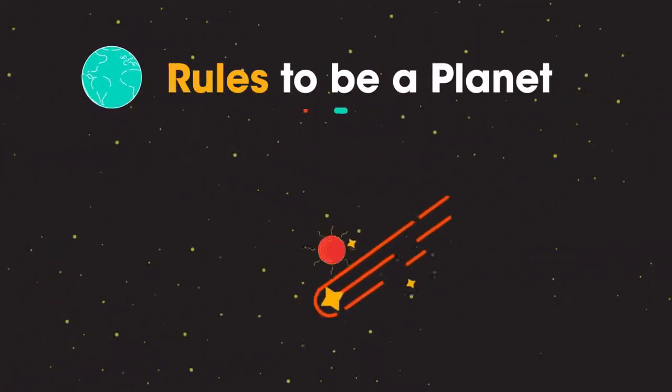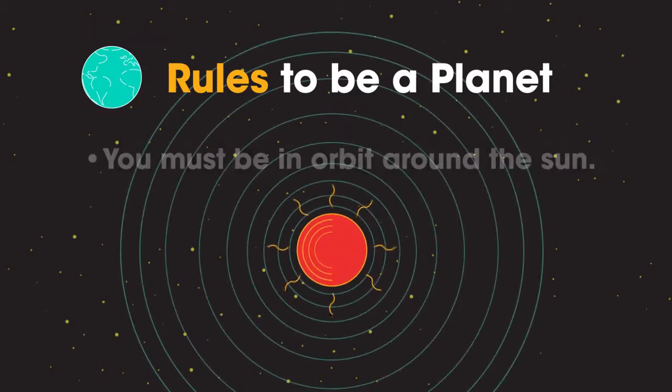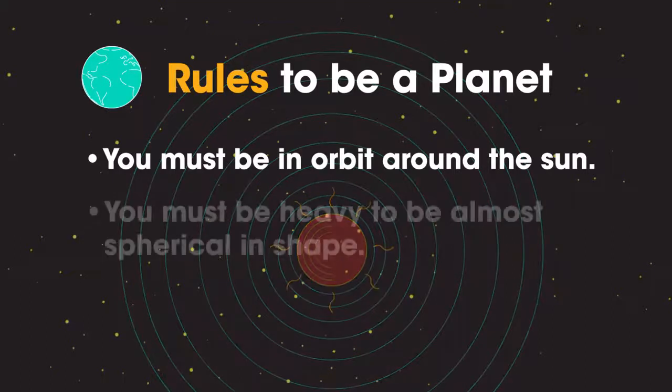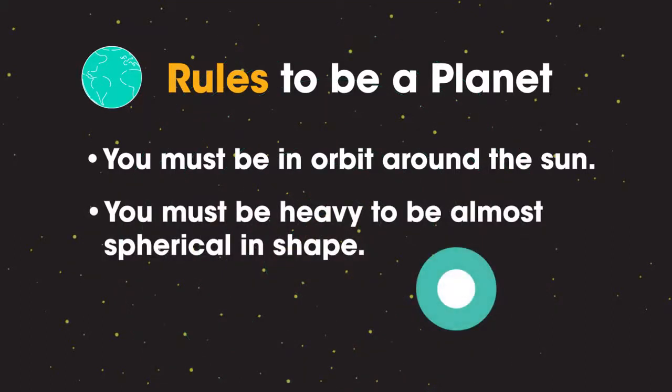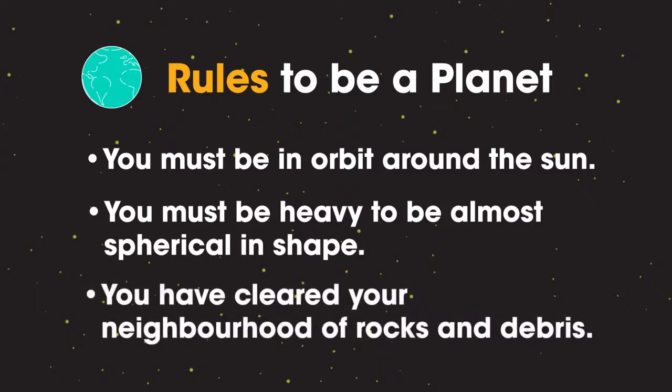There are certain rules to be a planet. Firstly, you must be in orbit around the Sun. Secondly, you must be heavy enough to be almost spherical in shape. And thirdly, you have cleared your neighborhood of rocks and debris.